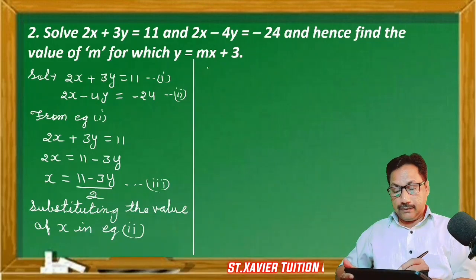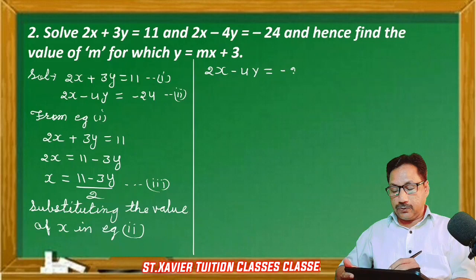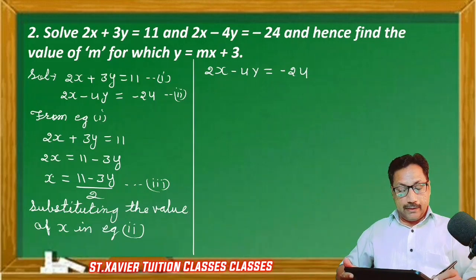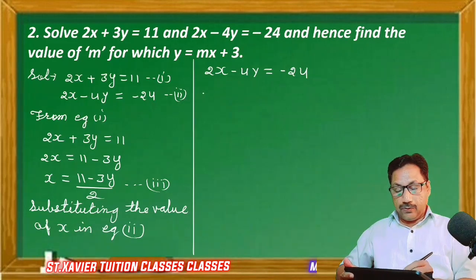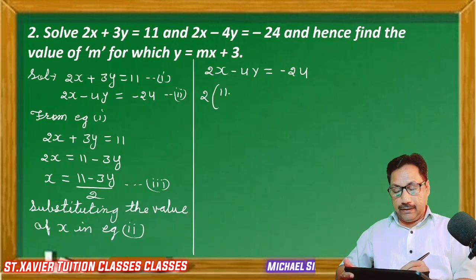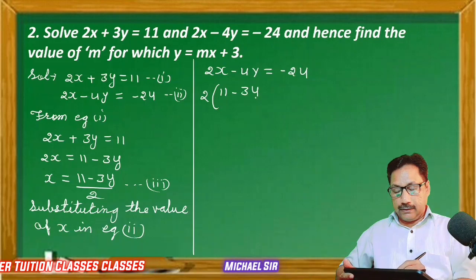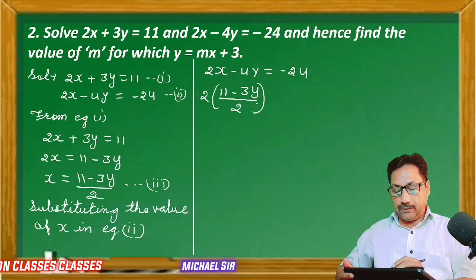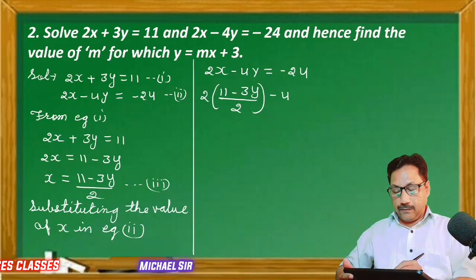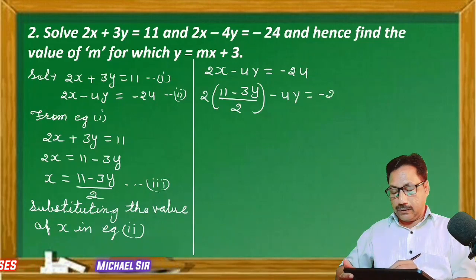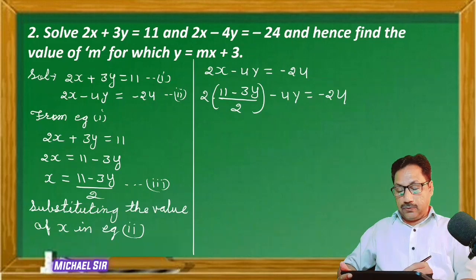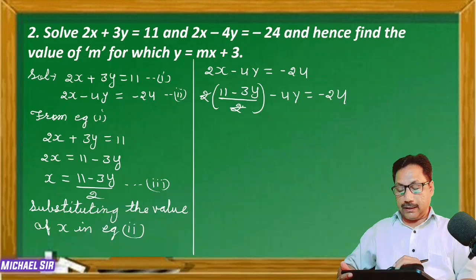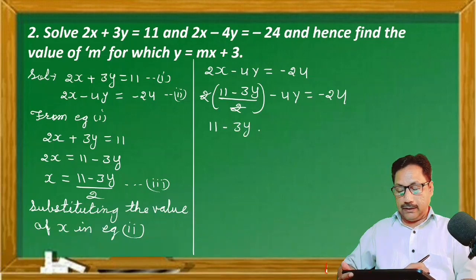Writing the second equation: 2x - 4y = -24. We found the value of x, so we will substitute that value in place of x. So: 2 × ((11 - 3y) / 2) - 4y = -24. Now 2 multiplies with (11 - 3y)/2, so the 2 in the numerator and denominator cancel. We are left with 11 - 3y - 4y = -24.